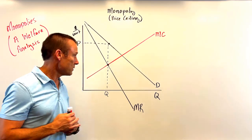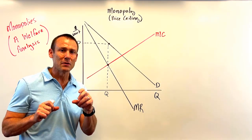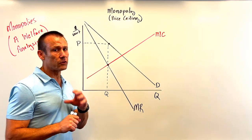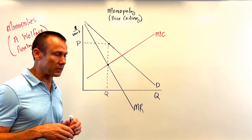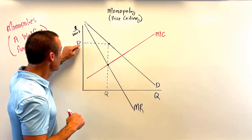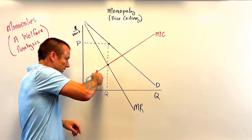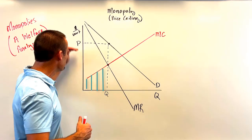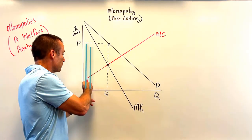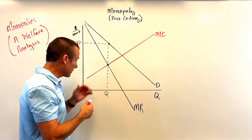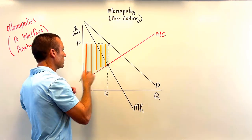Now let's get to the welfare analysis. I'm going to introduce a slightly more complex but interesting twist, starting with producer surplus. The general approach is straightforward: the marginal cost curve shows the cost of producing each unit. The price is the benefit the firm gets by selling each unit. The difference between the benefit and the cost for each unit is the surplus, so the area between price and the MC curve up to Q is producer surplus.